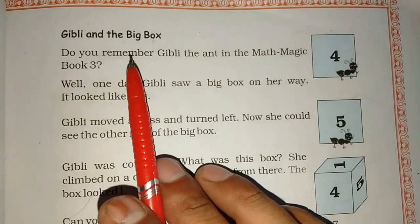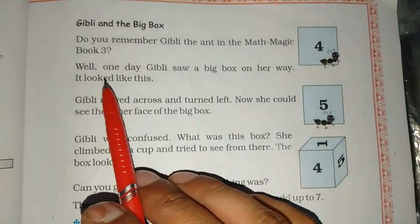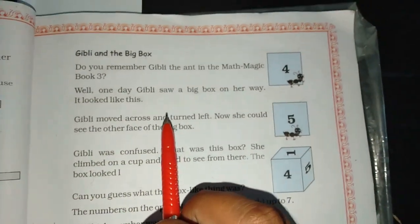Today we are going to read Ghibli and the Big Box. Do you remember Ghibli the Ant in the Math Magic Book 3?